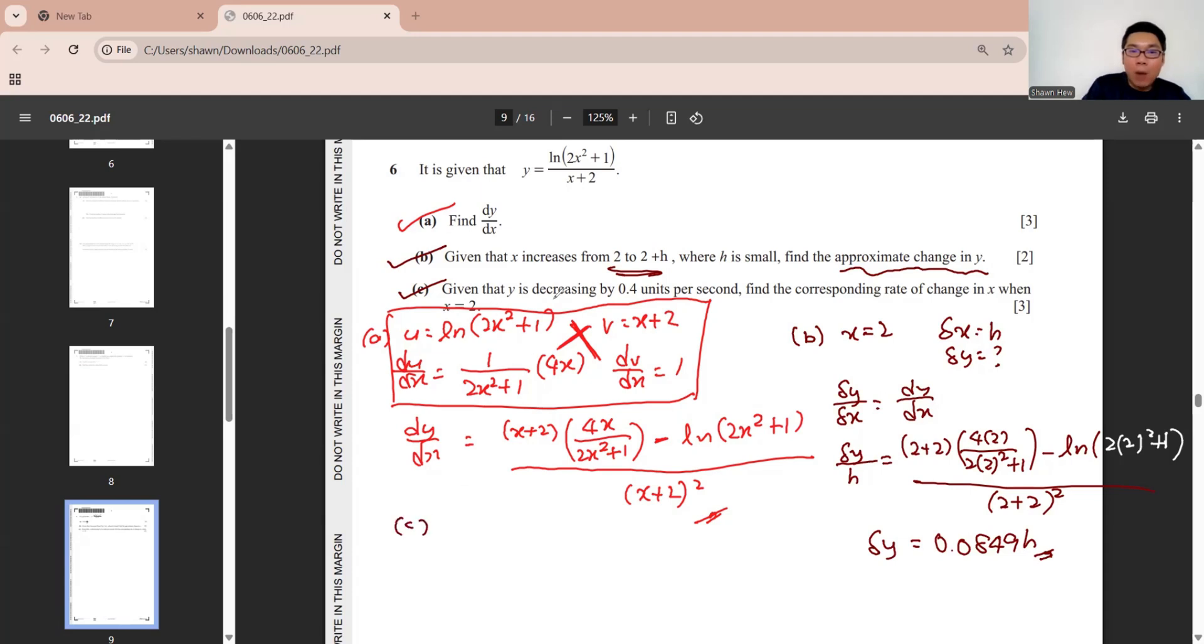Part c. They say given that y decreasing by 0.4 unit per second. So dy/dt is decreasing by 0.4. Find the corresponding rate of change of x. Means that dx/dt is how much? When x equals to 2. So rate of change. We use chain rule. dx/dt equals to dx over something times something over dt. The info that we have is dy/dt. So here is dy dy. dx/dy. When x is 2. Already we find a value for dy/dx. dx/dy is the reverse of it. And then dy/dt is negative 0.4. So dx/dt is negative 4.71.